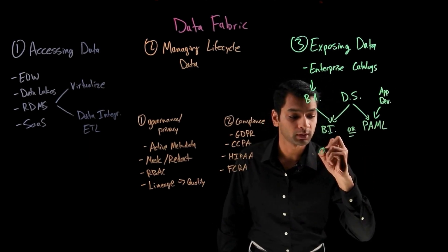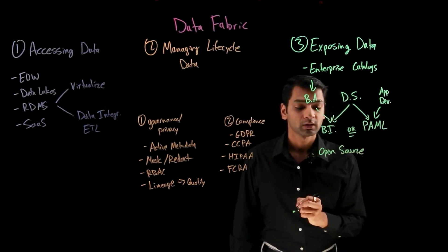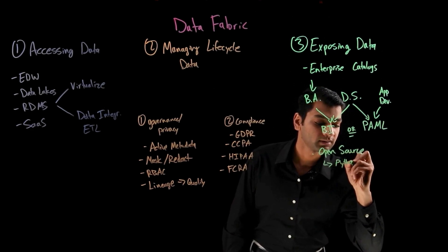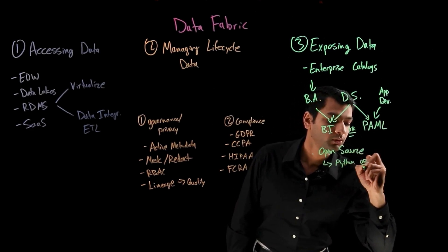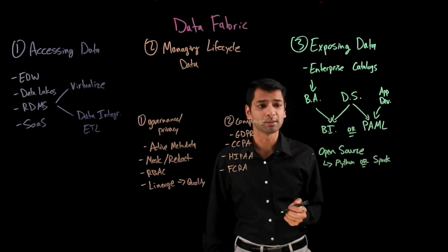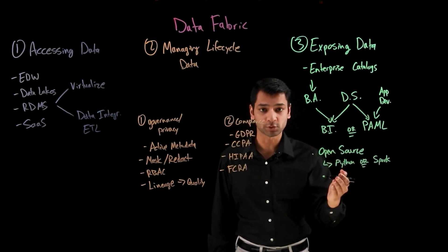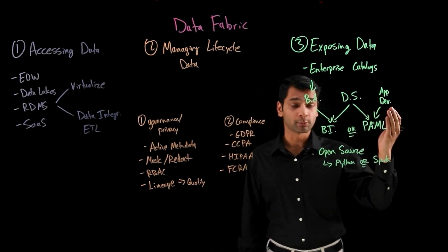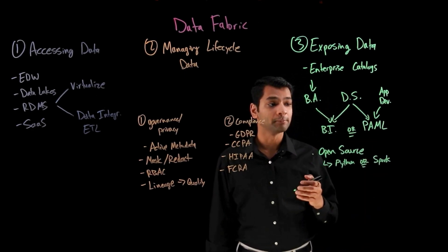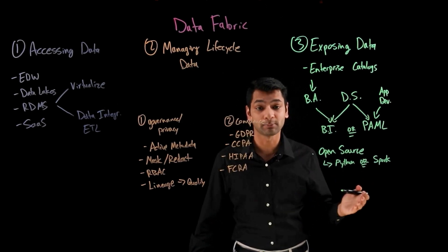A data fabric should support multiple vendors for these platforms, but it should also support open source technologies such as Python, Spark, and many more. So our data fabric should support multiple vendors, support open source technologies, and support app developers to build custom applications by exposing data from the catalog through different API endpoints.